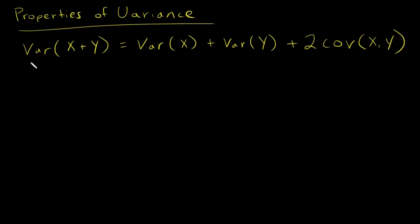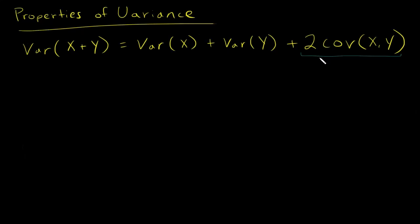In this video, I want to show the proof that the variance of a sum of random variables equals the sum of the variance of those random variables plus 2 times the covariance. Students often will accidentally drop this piece, and indeed you can drop it if X and Y are uncorrelated. But generally you should not assume that X and Y are uncorrelated unless you know that, so you want to keep this piece.